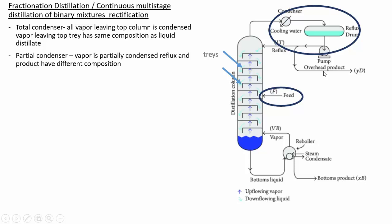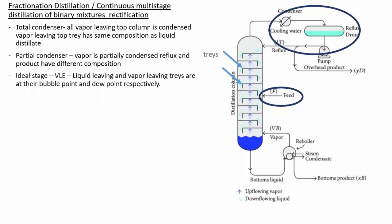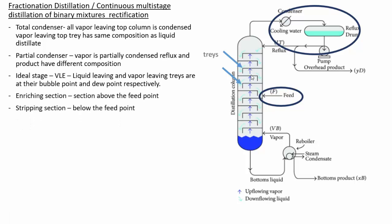An ideal stage or tray means there is vapor-liquid equilibrium on that tray. The liquid leaving and the vapor leaving the tray are at their bubble point and dew point respectively. For an ideal stage, the liquid temperature is at its bubble point and the vapor temperature is at its dew point. The column also has an enriching section and a stripping section.